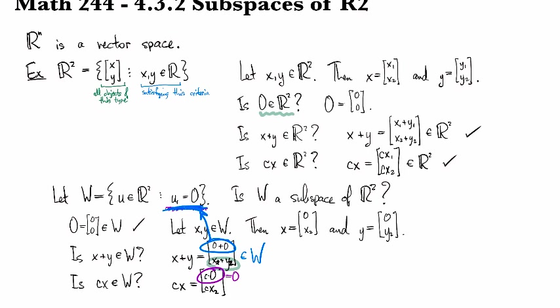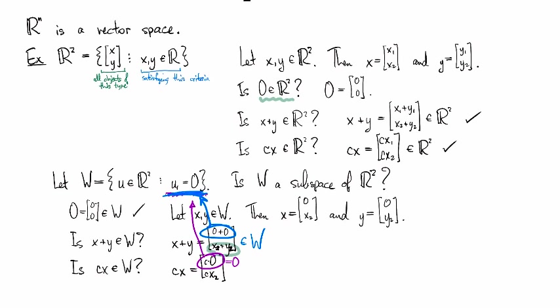And so then that means that the first coordinate is 0, which means we've satisfied this condition. So yes, it's going to be an element of w.